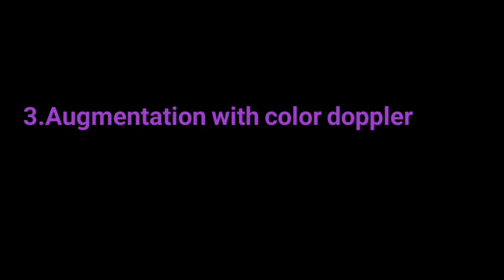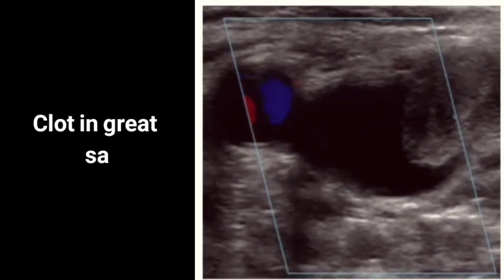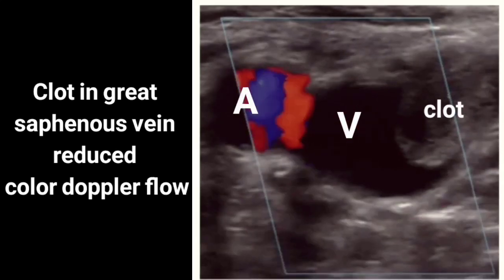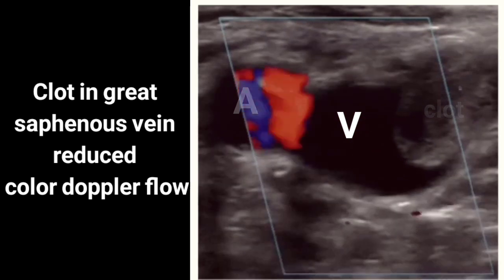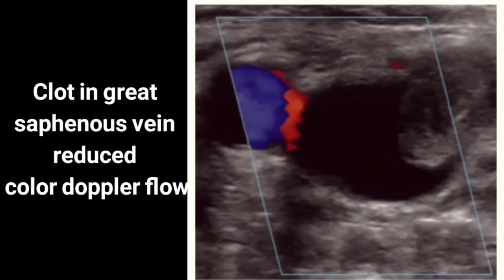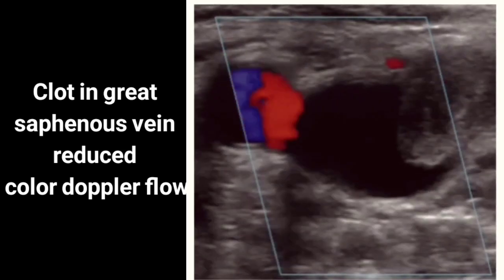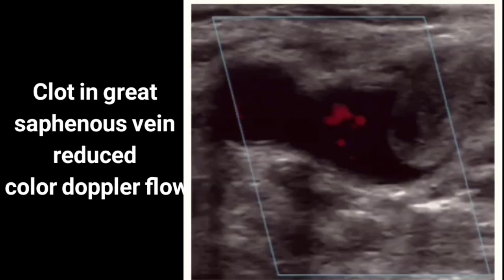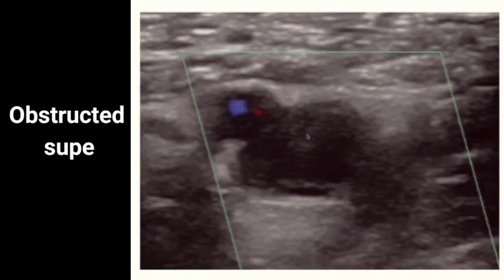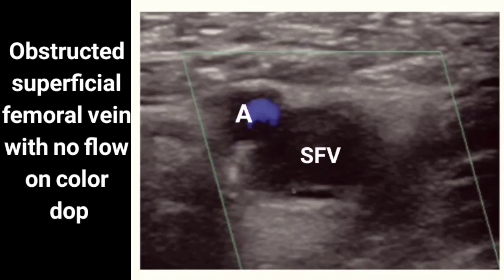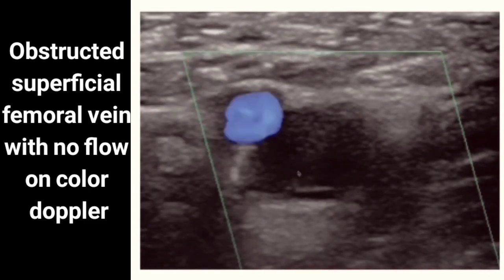Number three: augmentation with color Doppler. We can augment venous flow by squeezing the leg distal to where we are scanning. If color Doppler demonstrates a homogenous increase in venous flow, this suggests there is no occlusive thrombus between where we are squeezing and scanning. If there is no increase in venous flow, there could be a DVT. Use this method with caution, as there could be a risk of dislodging an existing clot and causing pulmonary embolism.